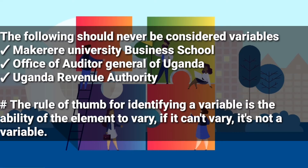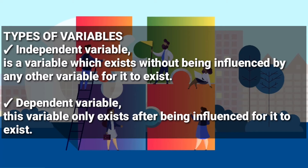There are two types of variables: the independent variable and the dependent variable. The independent variable is a variable which exists without being influenced by any other variable — it can exist on its own. The independent variable is what is expected to bring out the changes in the dependent variable. The dependent variable only exists after being influenced by the independent variable.